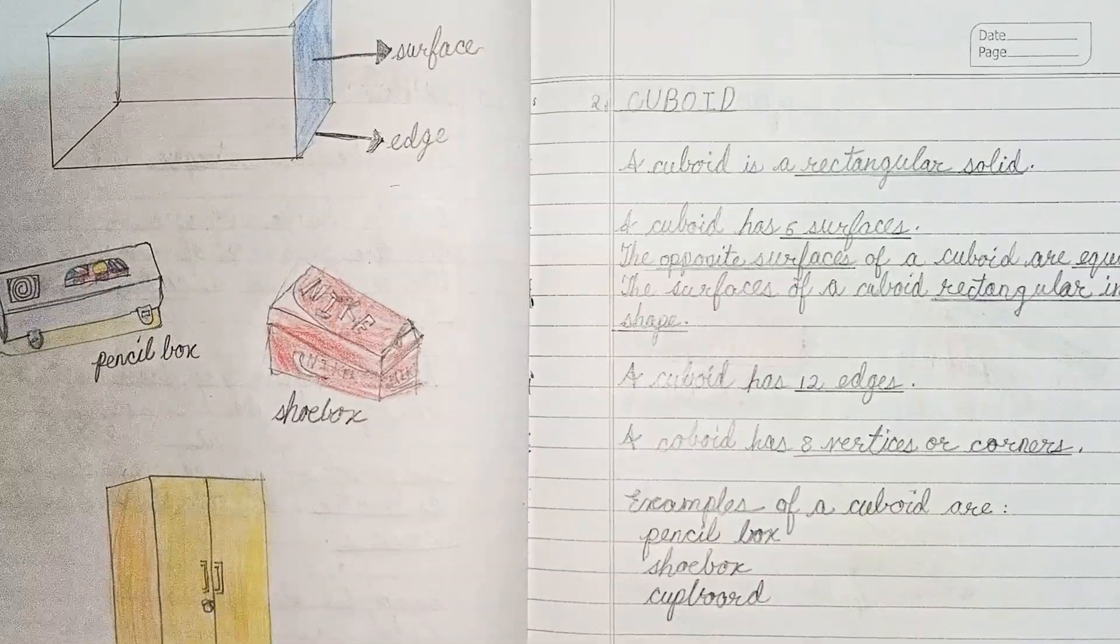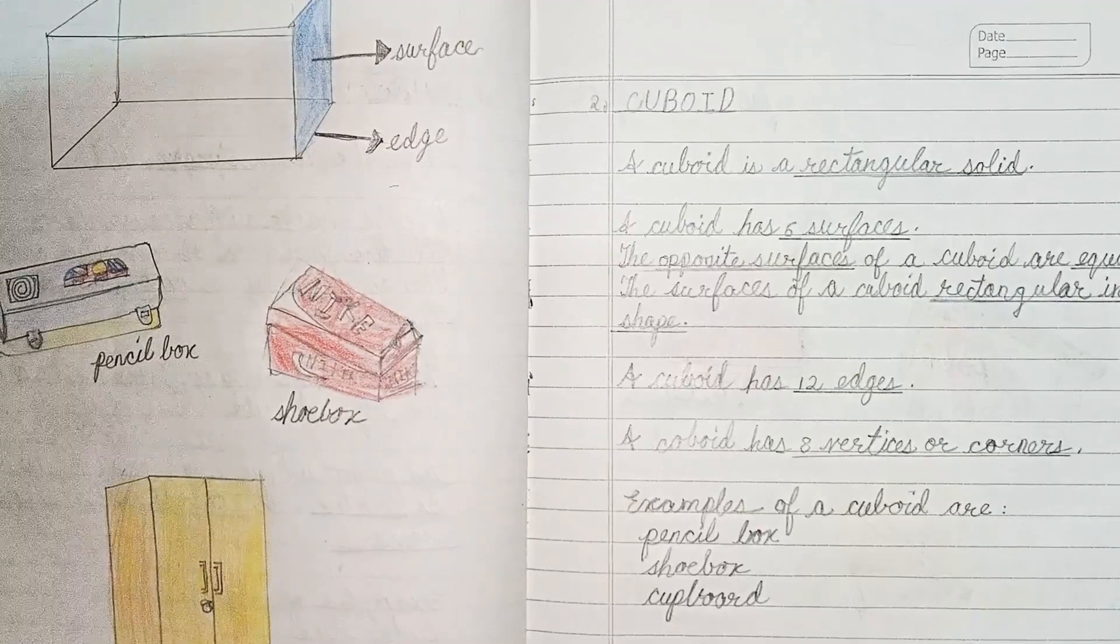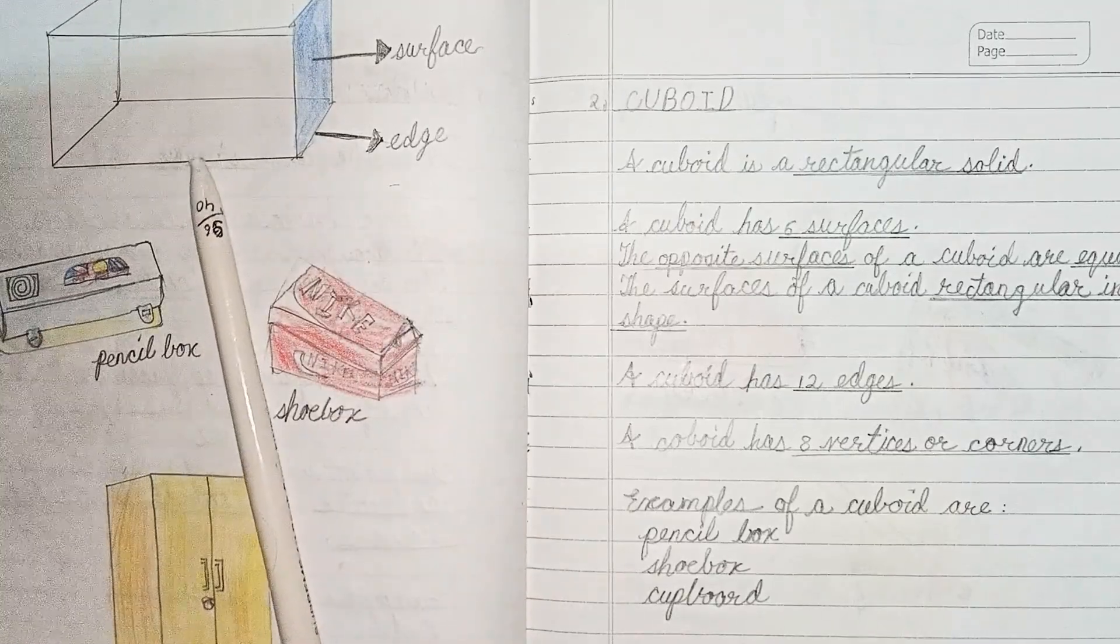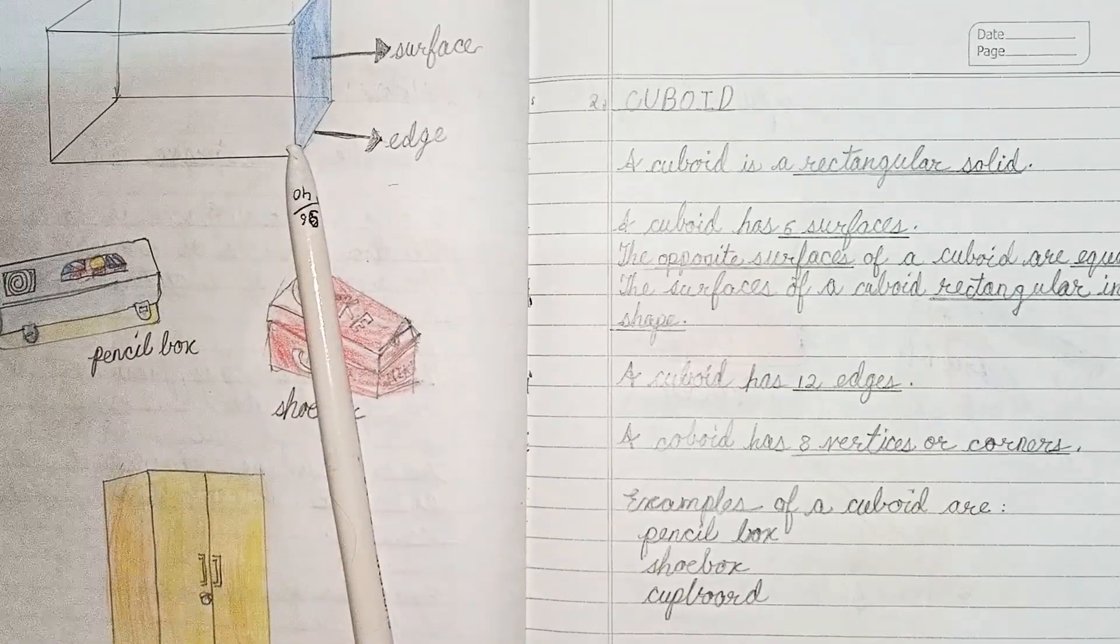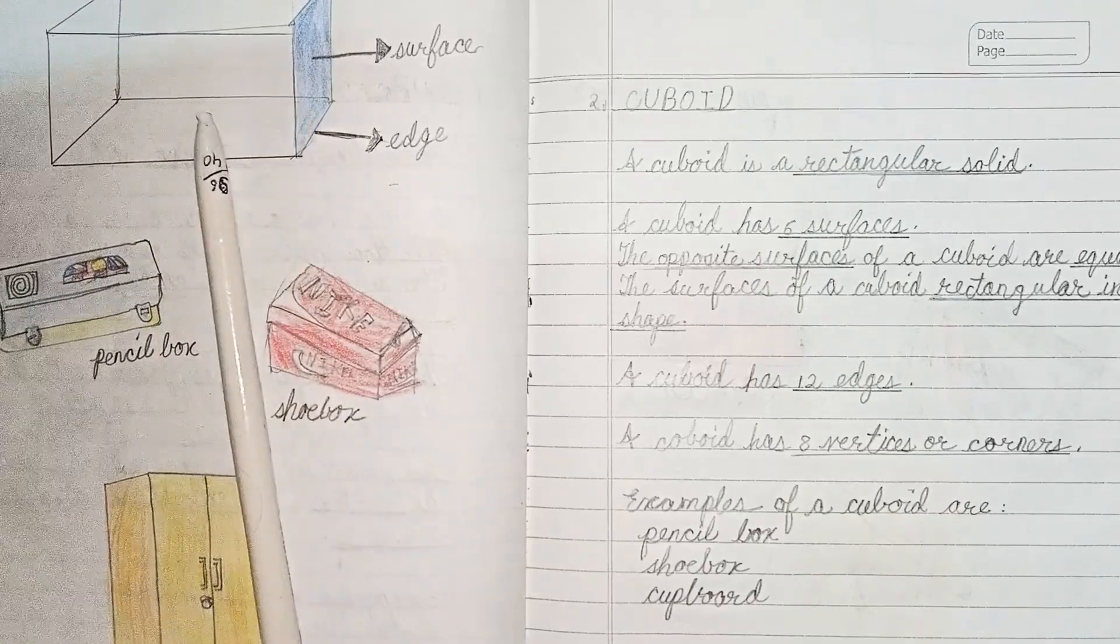The next solid figure is cuboid. A cuboid is a rectangular solid. A cuboid has six surfaces and the opposite surfaces of a cuboid are equal. The surfaces of a cuboid are rectangular in shape.